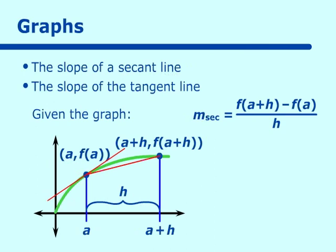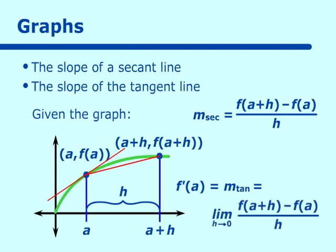The slope of the tangent line, which is f prime at a — m tangent — equals the limit as h approaches 0 of f(a+h) minus f(a), all over h. So now we have two formulas that we can use to determine our derivatives algebraically.